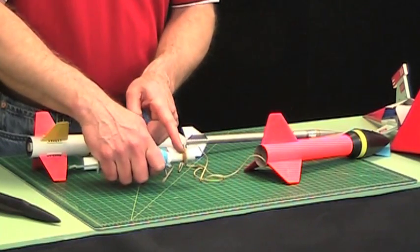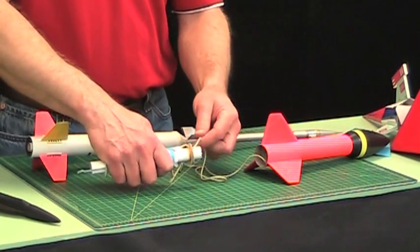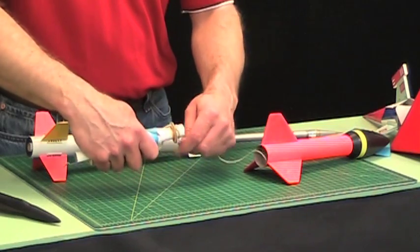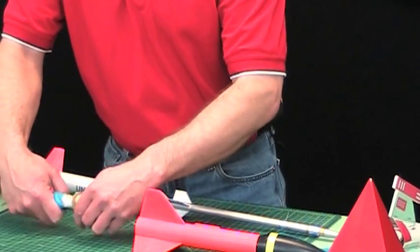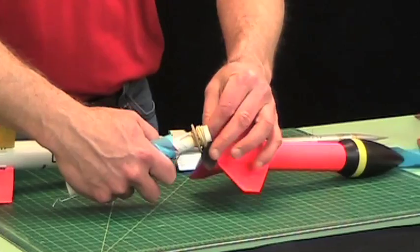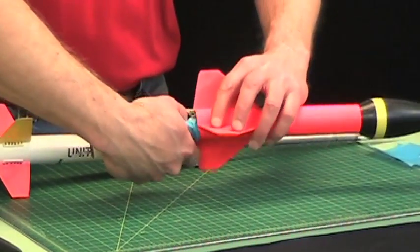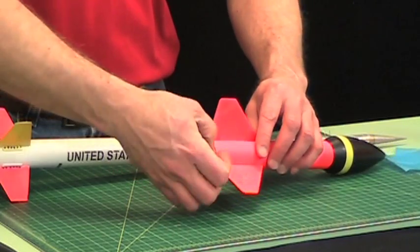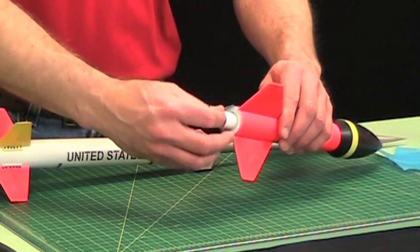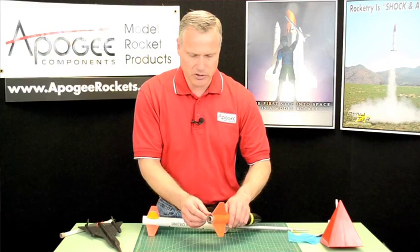I always keep my front centering ring a little bit further back from the end of the tube so that I can take the shock cord and just wrap it around like this. Just wind it up. You can slide it inside the rocket like that. And then it's all prepped and ready to go.